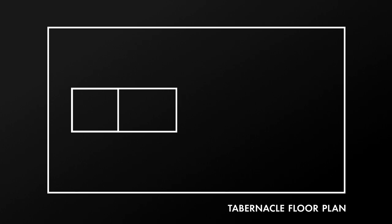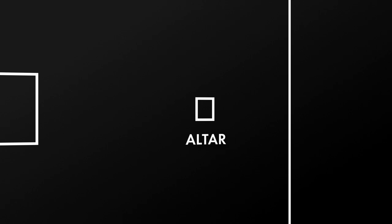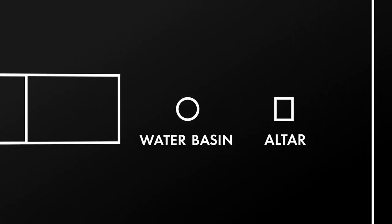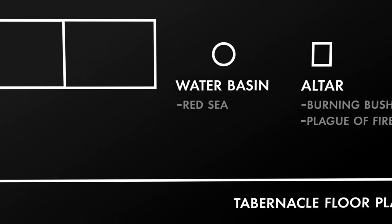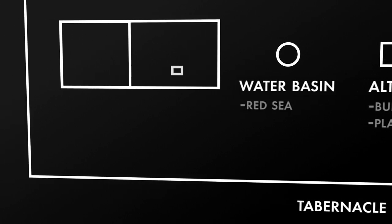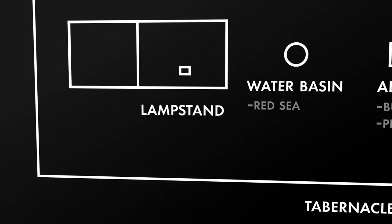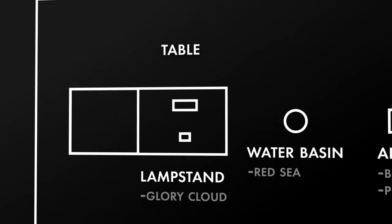But the numerical connections are only the beginning. The events throughout the book correspond to objects in each section of the tabernacle. In the courtyard, there's an altar for offerings and the bronze basin for washings. These correspond to the fire of the burning bush, or the plague of fire from heaven, and the crossing of the Red Sea. Moving one section in to the holy place, you have a lampstand that provides the only light in the dark tent, just like God's glory cloud provides light to the Israelites. You also have a table with bread on it, just like God provides bread from heaven — the manna in the wilderness.